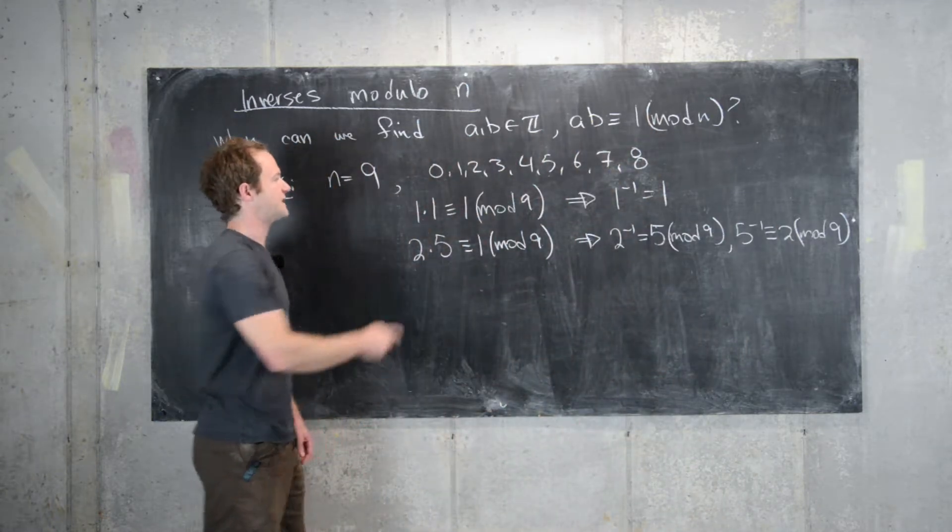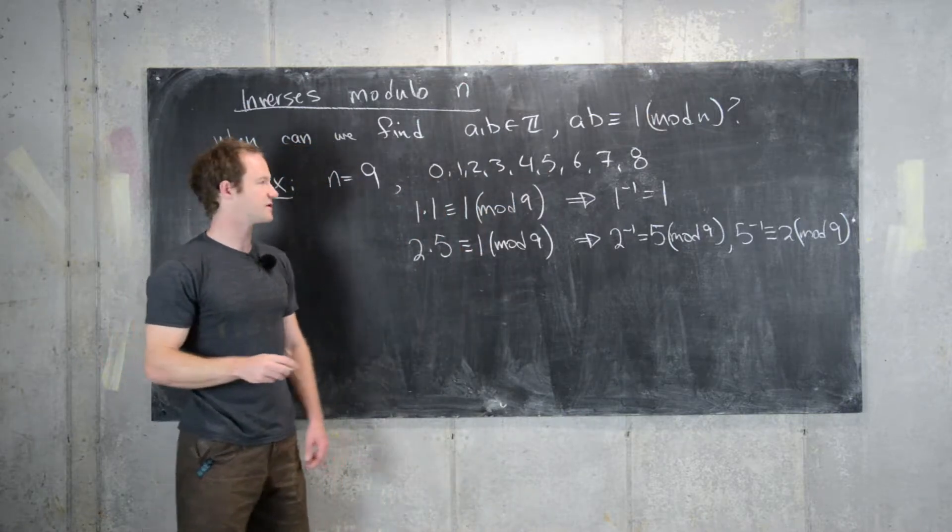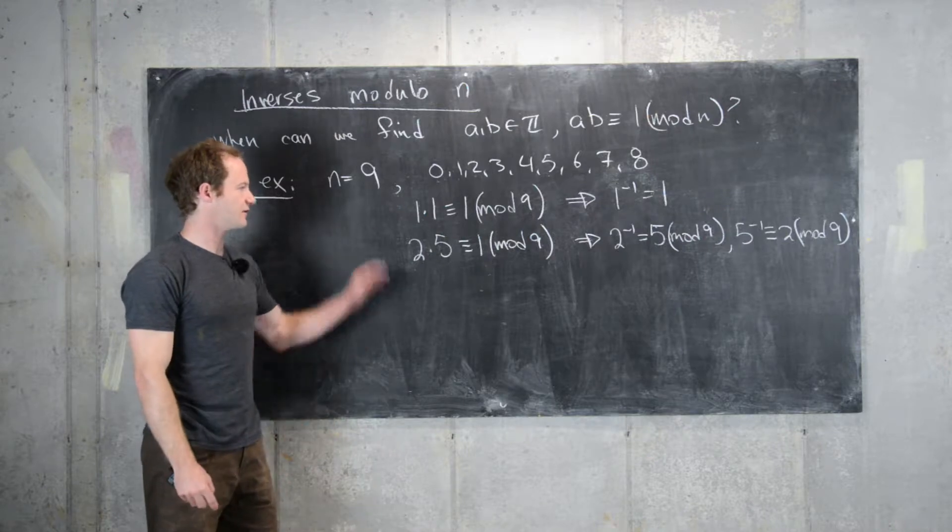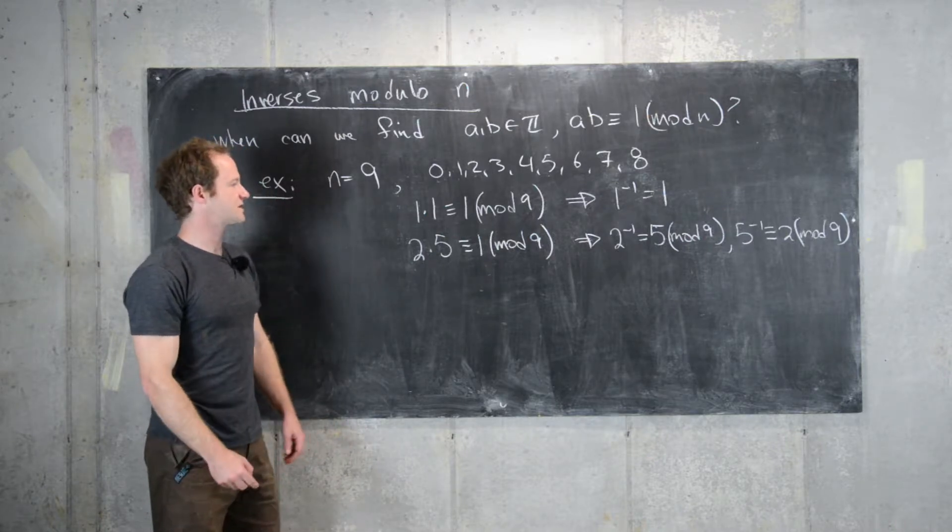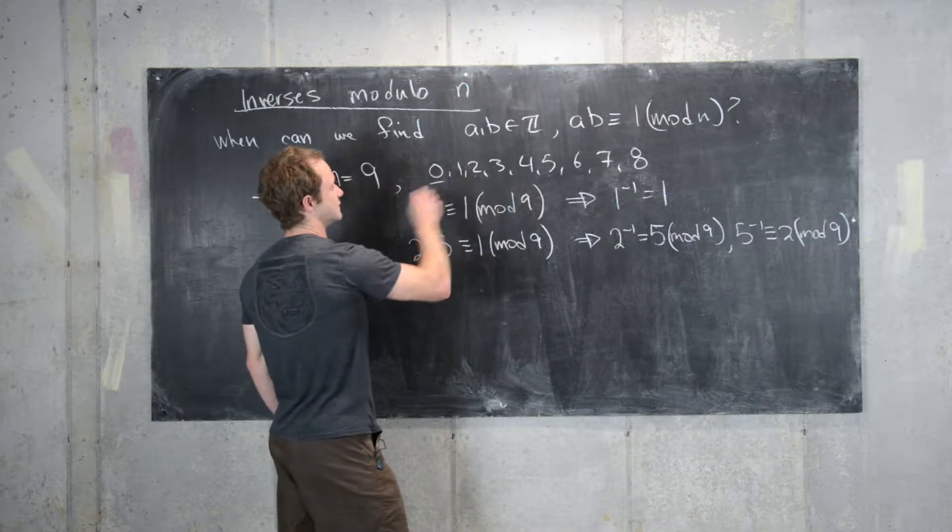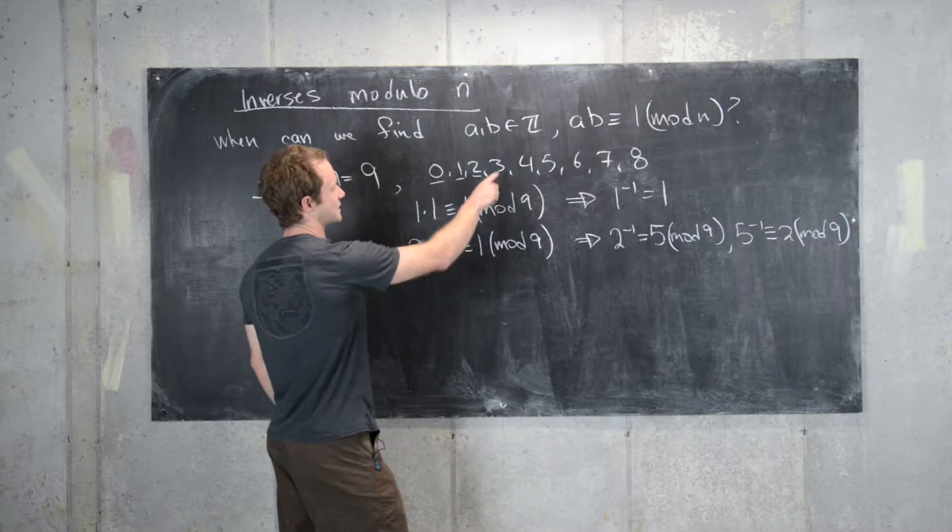So we've taken care of 1, 2, and 5. Obviously 0 doesn't have an inverse modulo n for any n because 0 times anything is 0, you can't ever get to 1. So let's look at some others. We have, we've taken care of 0, 1, 2. So let's look at 3.